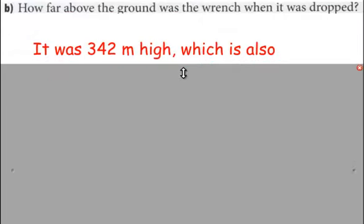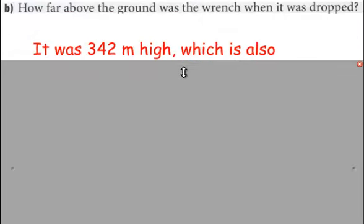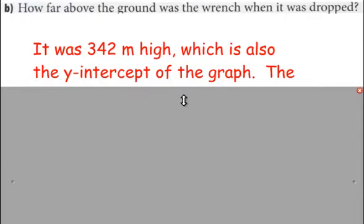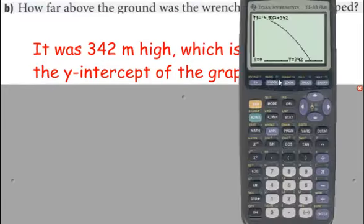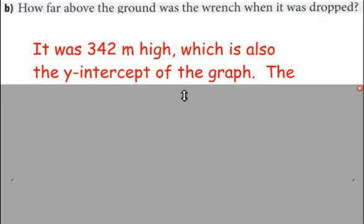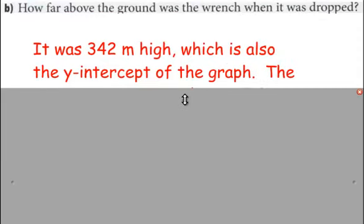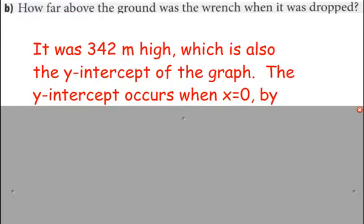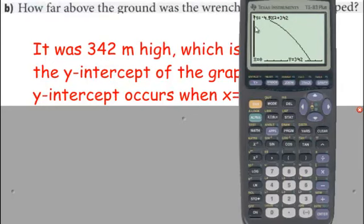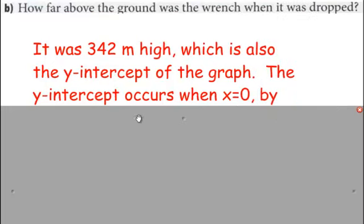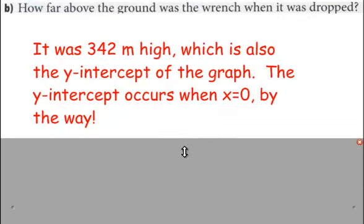So the next question. How far above the ground was the wrench when it was dropped? Well, we've already answered that, right? We know that it was 342 meters high. Now there's a word for this situation, and it's called the y-intercept of the graph. So this spot right here, where a graph, or where an equation, or a line, or where that crosses the y-axis right here, is called the y-intercept. And whenever something crosses the y-intercept, x is always going to be the same thing. It's going to be when x is 0. Remember that? When x is 0, we're right on the y-axis here. And when x is 0, y was 342. So that is the y-intercept. You can read it again on the video in case you forgot that. This can be like your note.